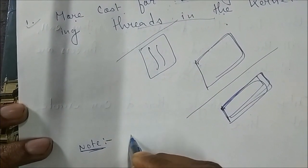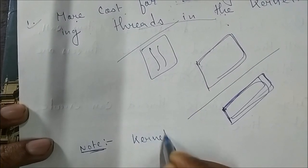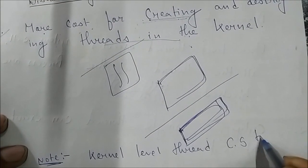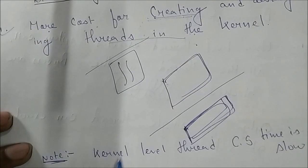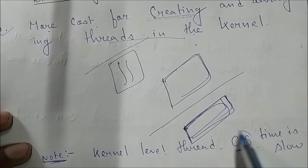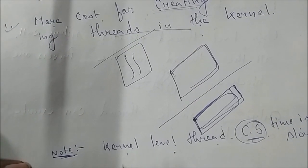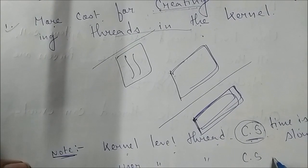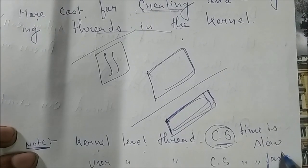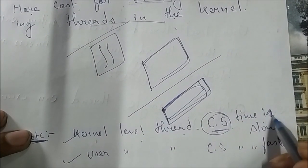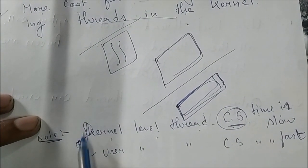An important note for GATE: kernel level thread context switching time is low. User level thread context switching time is fast. So remember: kernel level thread — context switching time is low; user level thread — context switching time is fast.